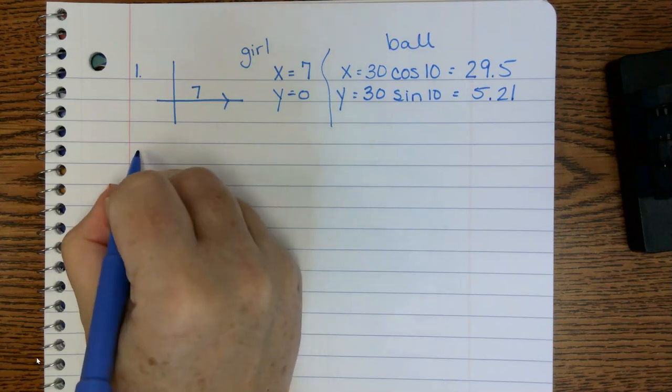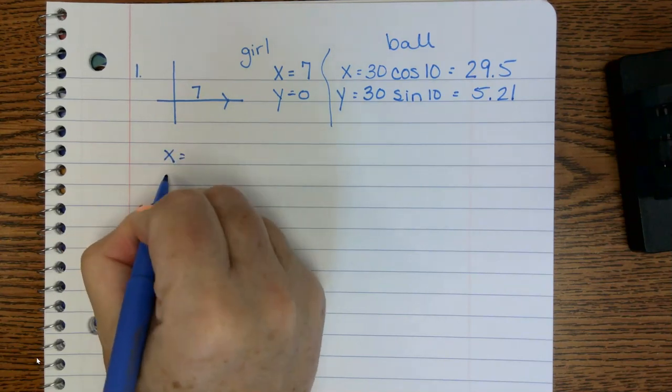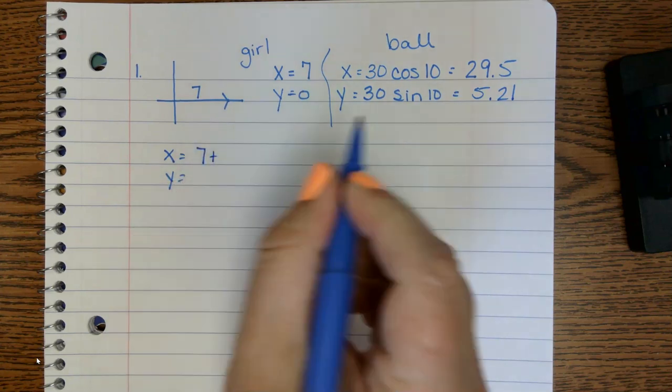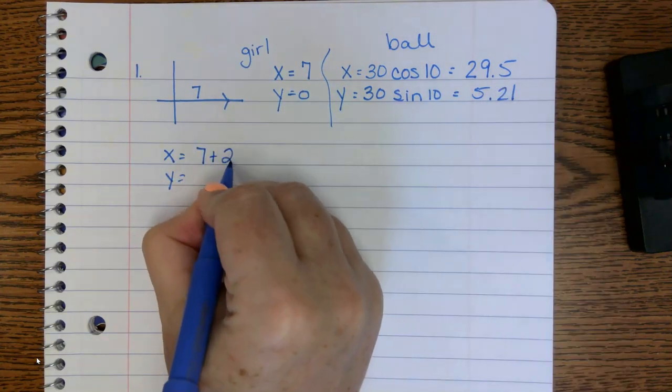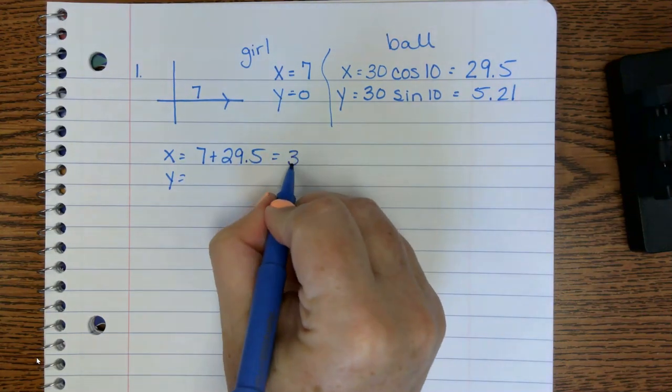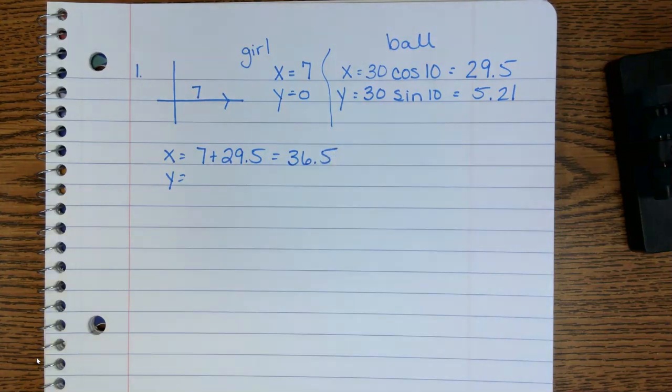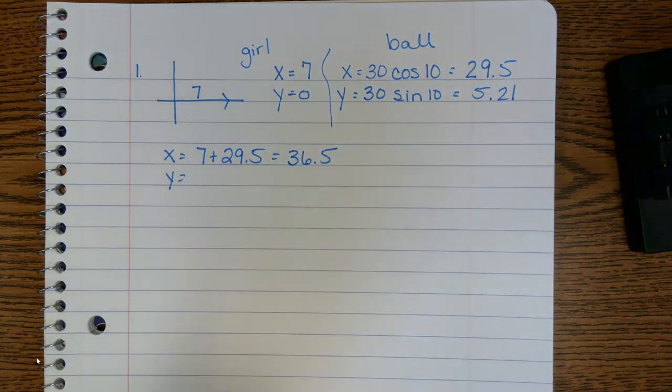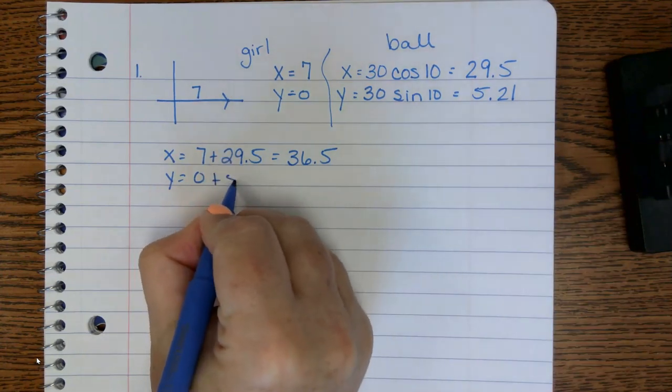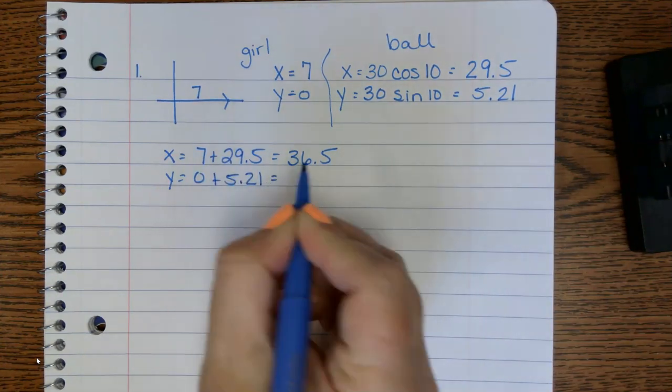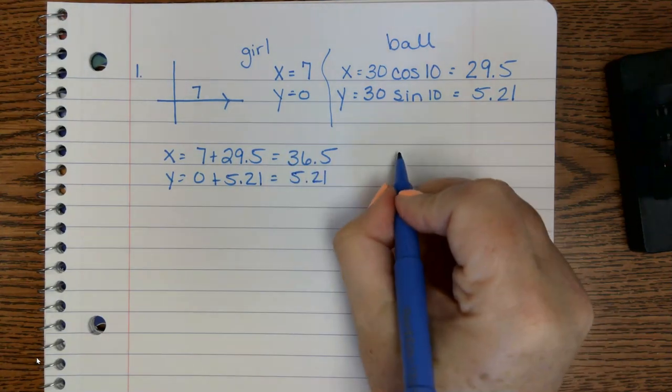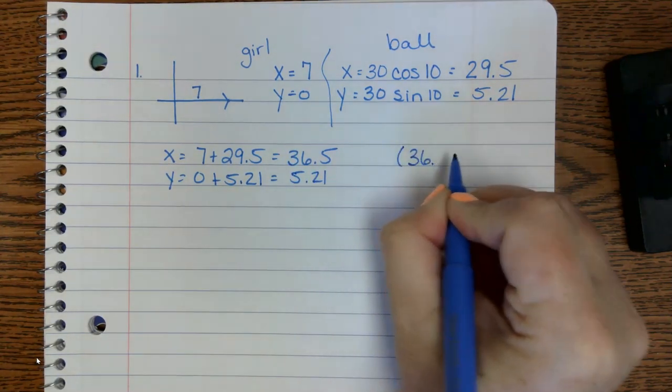So now what we're going to do is combine our x's and our y's. So the girl's x was 7 and the ball's x was 29.5. We're going to add those together and get 36.5. Now the girl didn't go anywhere off the ground, but the ball did. So here is our ordered pair: 36.5 and 5.21.